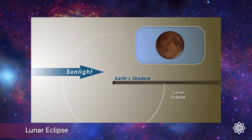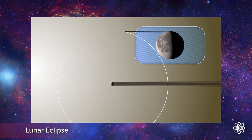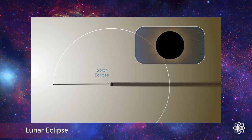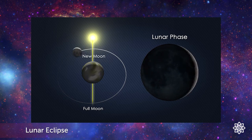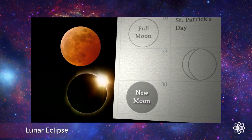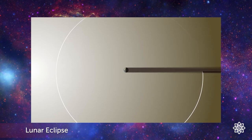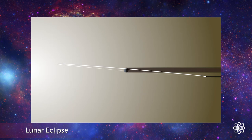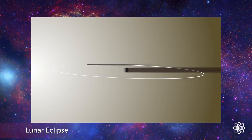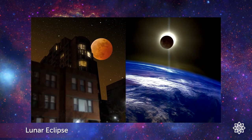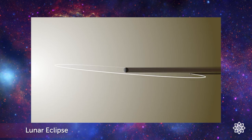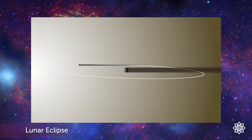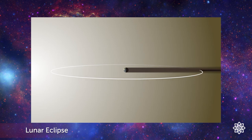A lunar eclipse occurs when the moon passes through the Earth's shadow, just as a solar eclipse occurs when part of the Earth passes through the moon's shadow. The moon circles the Earth every month as it cycles through its phases, lining up at both full moon and new moon — so why don't eclipses happen twice a month? The reason is that the moon's orbit around the Earth is tilted relative to the Earth's orbit around the Sun. They rarely shade each other thanks to this orbital tilt. But about twice a year, the moon's tilt puts it in just the right position to pass through the Earth's shadow, causing a lunar eclipse.